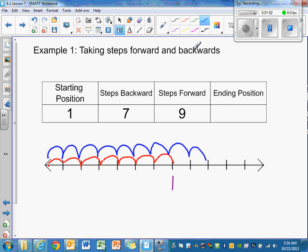So then what is our ending position? Well, if this is 1, then the next one is 2 and the one we landed on was 3. So our ending position is 3. Pretty easy.